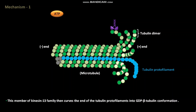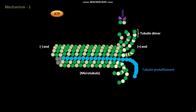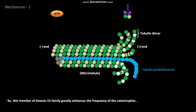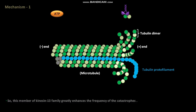This member of the kinesin-13 family then facilitates the removal of terminal tubulin dimers, greatly enhancing the frequency of catastrophes. It then dissociates from the tubulin dimer, and ATP binds with the freed member of the kinesin-13 family.